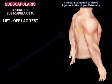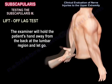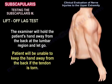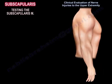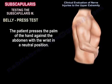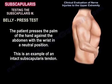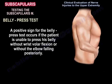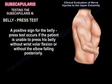The lift-off lag test involves the examiner holding the patient's hand away from the lumbar region then releasing it — the patient will be unable to keep the hand away from the back if the tendon is torn. In the belly press test, the patient presses the palm against the abdomen with the wrist in neutral position. A positive sign occurs if the patient cannot press the belly without wrist volar flexion or without the elbow falling posteriorly.